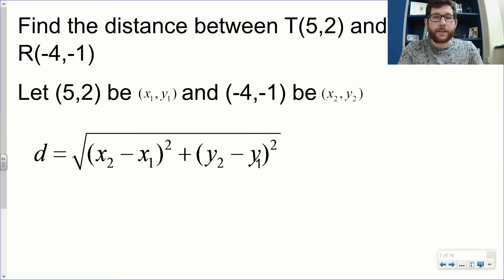Let's take a look at a distance problem here. We want to find the distance between T(5,2) and R(-4,-1). Notice we're going to set this up so (5,2) are my x₁,y₁ and (-4,-1) is my x₂,y₂. We want to be careful here. The 5 and -4 are my two x values, so they go in my x's here. A really common mistake is to put the 5 and 2 within the same parentheses. That's incorrect.